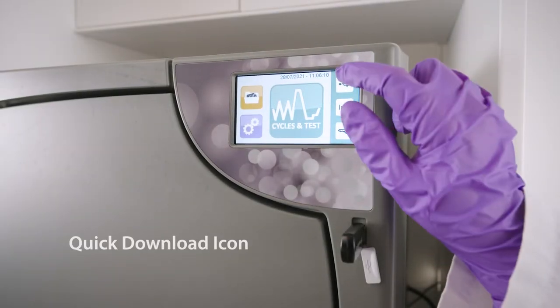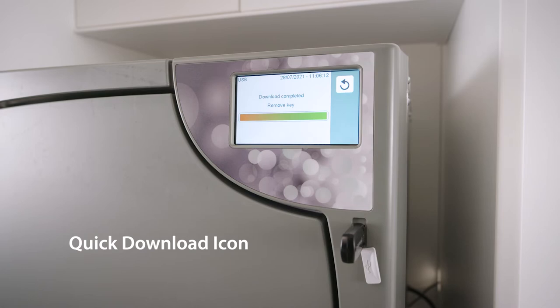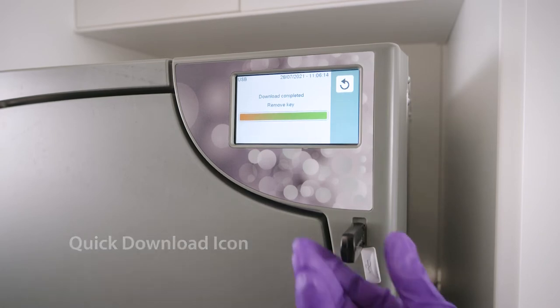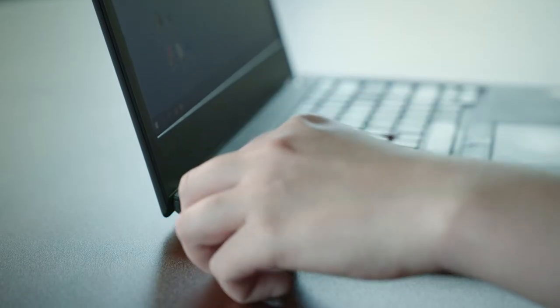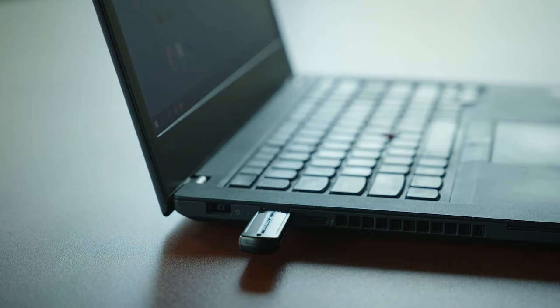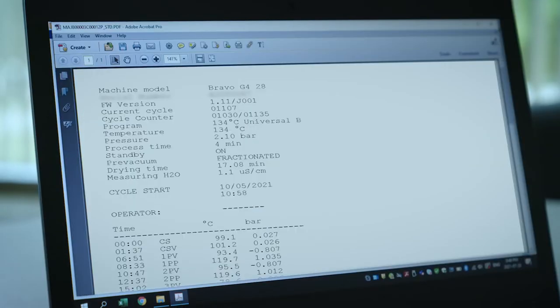The Quick Download icon is used to download the most recently unsaved cycles directly onto the USB key provided with the unit. This feature takes the guesswork out of data logging, ensuring that only the latest cycles that have not yet been transferred will be saved onto the USB key.